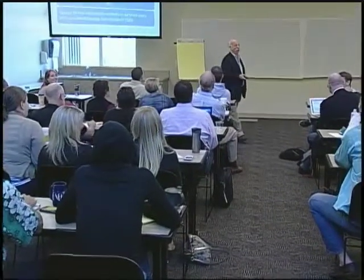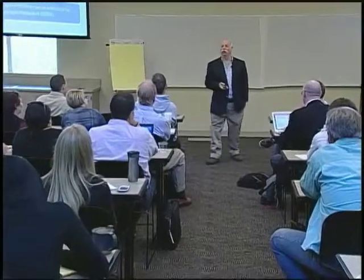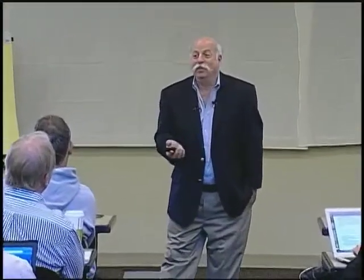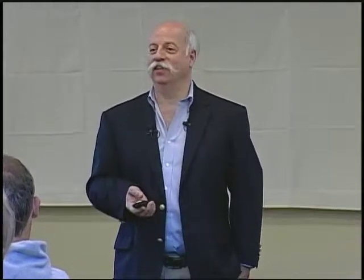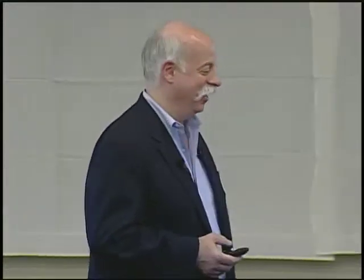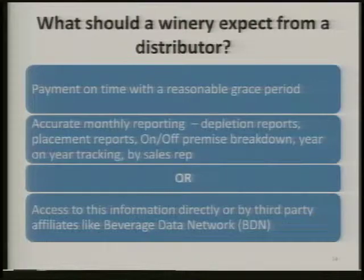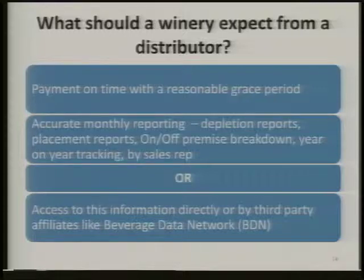One common excuse: the distributor doesn't want to give the winery their account list because they think you'll share it with another distributor. But you can find all 10,000 licensees on the New York State Liquor Board website — anybody can find that information. That is such a lame excuse. At minimum, you should be getting depletion reports, an on- and off-premise breakdown, year-on-year tracking by varietal, and reporting by sales rep — or they should subscribe to Beverage Data Network, a third-party service.